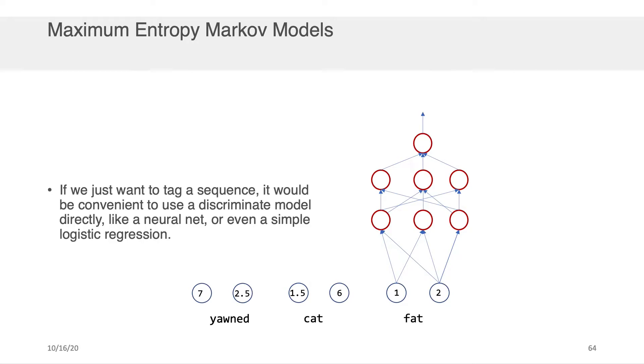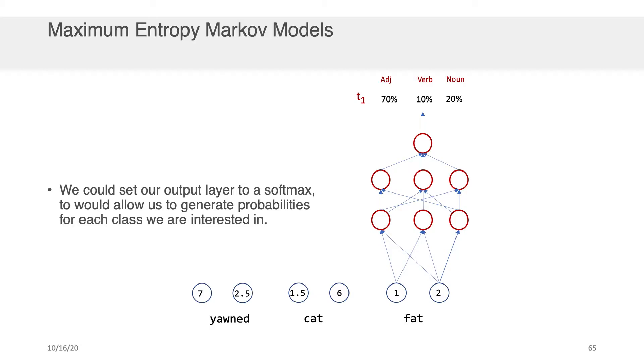Well, one way we could do it is we could set that output, instead of being just a simple sigmoid, we could make it a softmax layer. And the softmax layer would then, instead of telling us the probability of a binary outcome one or zero, it would tell us the probability of three outcomes that we care about, adjective, verb, or noun.